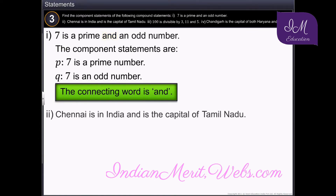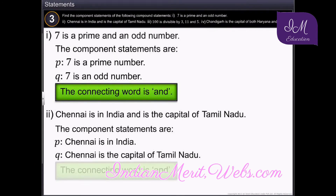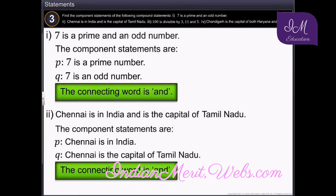The next compound statement is: Chennai is in India and is the capital of Tamil Nadu. The component statements are: Chennai is in India, and Chennai is the capital of Tamil Nadu. Here the connecting word is 'and'.